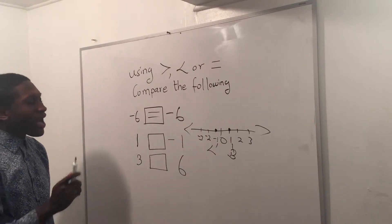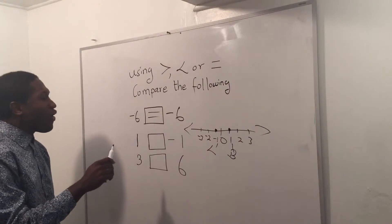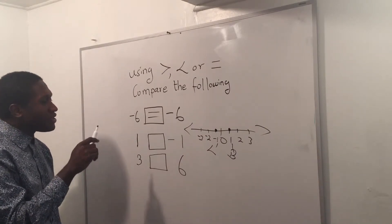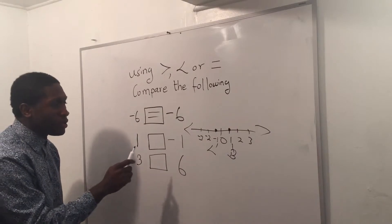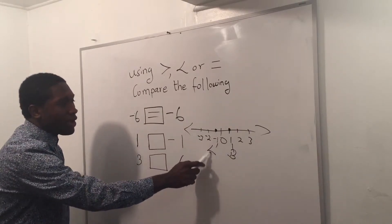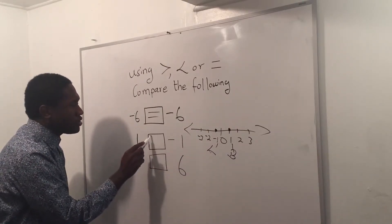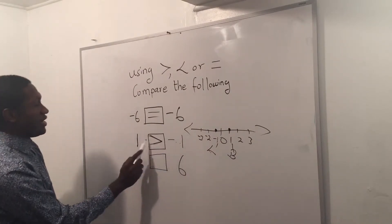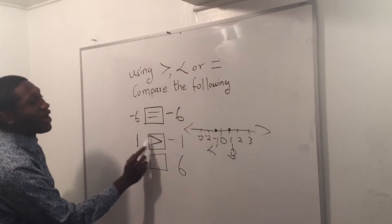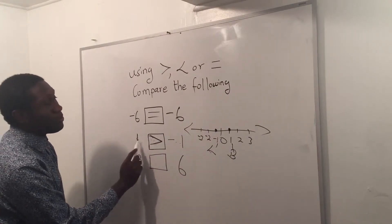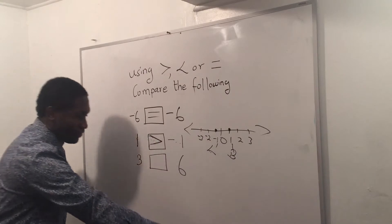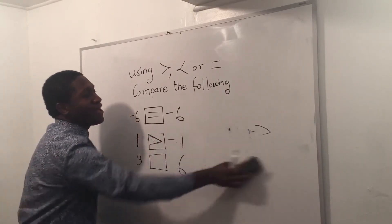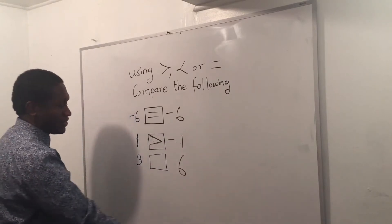Now that I know which one is lower and which is bigger, I use a sign that will turn its back on the number that is lower. We said negative one is lower, so I use the sign that turns its back on negative one, and it's eating the one — so we know the one is bigger.